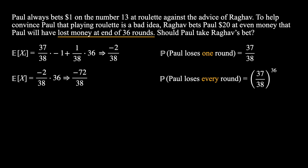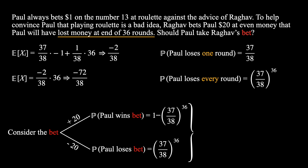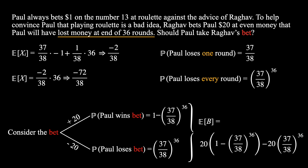Now that we've looked at Paul's performance on the roulette wheel, let's also consider Raghav's bet. The bet has two branches. First, the plus $20 branch: this occurs if Paul wins the bet, with probability equal to 1 minus the probability that Paul loses every single round. Second, the minus $20 branch: this occurs if Paul loses the bet, which is equivalent to Paul losing every single round. Combining both branches, we find the expected value of the bet by multiplying each branch's value by its probability.